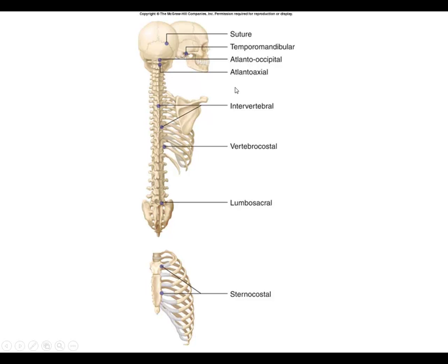Different types of joints exist between bone and bone — a suture is one example. We also see the joints between vertebrae: the intervertebral joints. There are joints between the articulating facets, which are synovial joints, and there are also the intervertebral discs, which represent a fibrocartilaginous or symphysis-type joint.